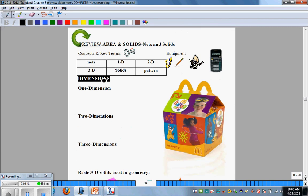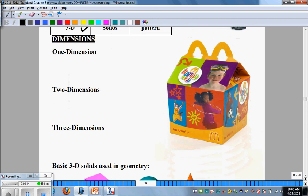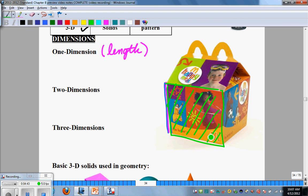We're going to be talking about a real simple concept today called nets. We're also going to recap the concept of dimensions: one dimension, two dimension, three dimension, introduce ourselves to solids and something called patterns. Using this Happy Meal box as a guide, one dimension would be just this edge length here. One dimension is simply length.